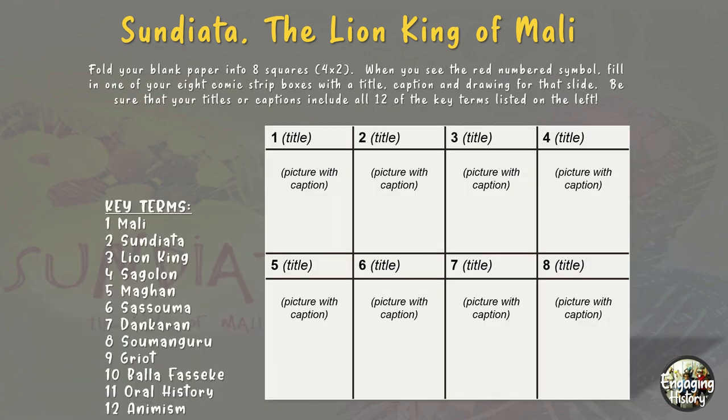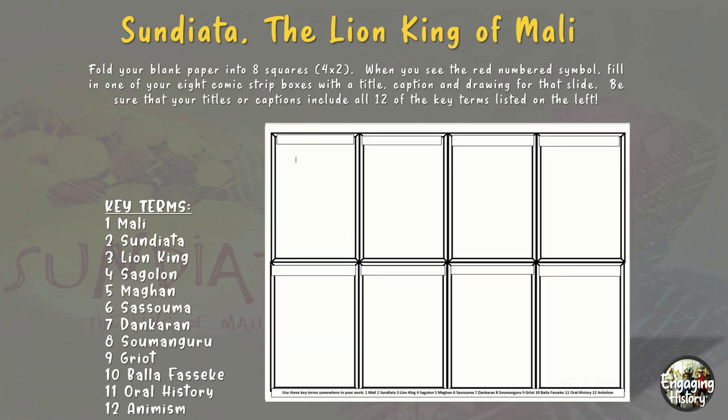To start the lesson, I ask my students to fold a blank piece of paper into eight squares. By the end, they're going to have eight pictures with captions and titles. The added challenge is that I ask students to use all 12 key terms listed on the left at some point in their comic strips. In the resource I designed, there is a pre-made printout you could use instead of asking students to fold a blank paper — either way will work.